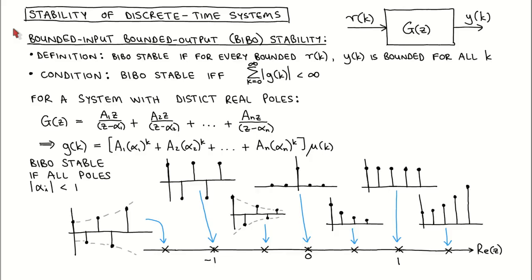There are several definitions for stability, but in this module we only look at bounded input-bounded output stability. Consider a discrete-time system described by the transfer function g of z and with input r and output y.